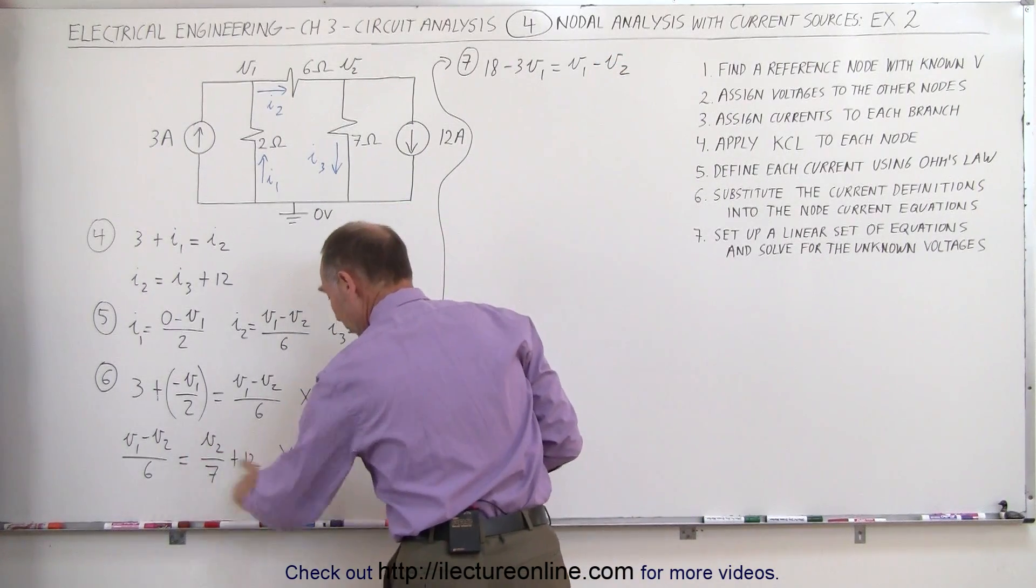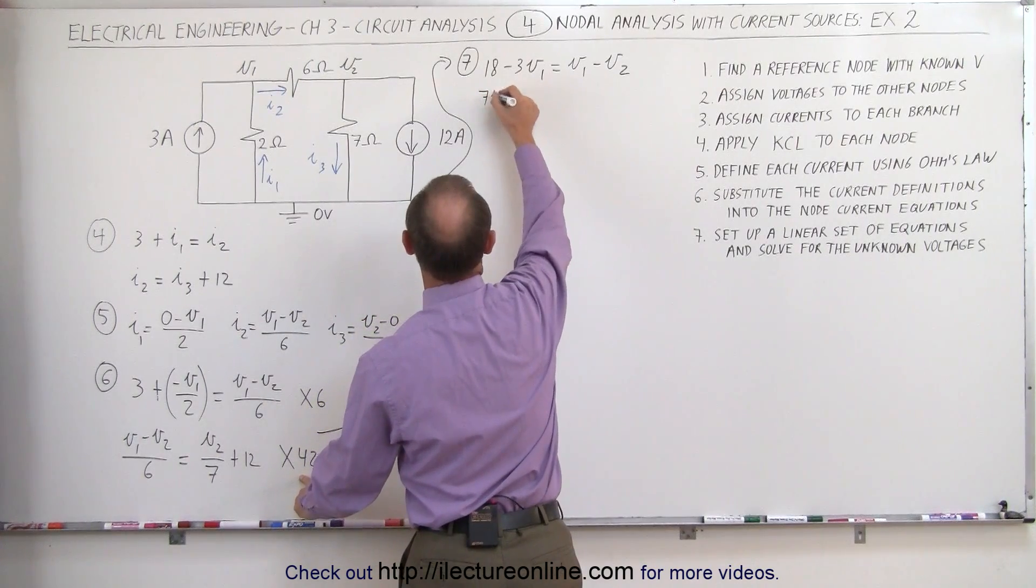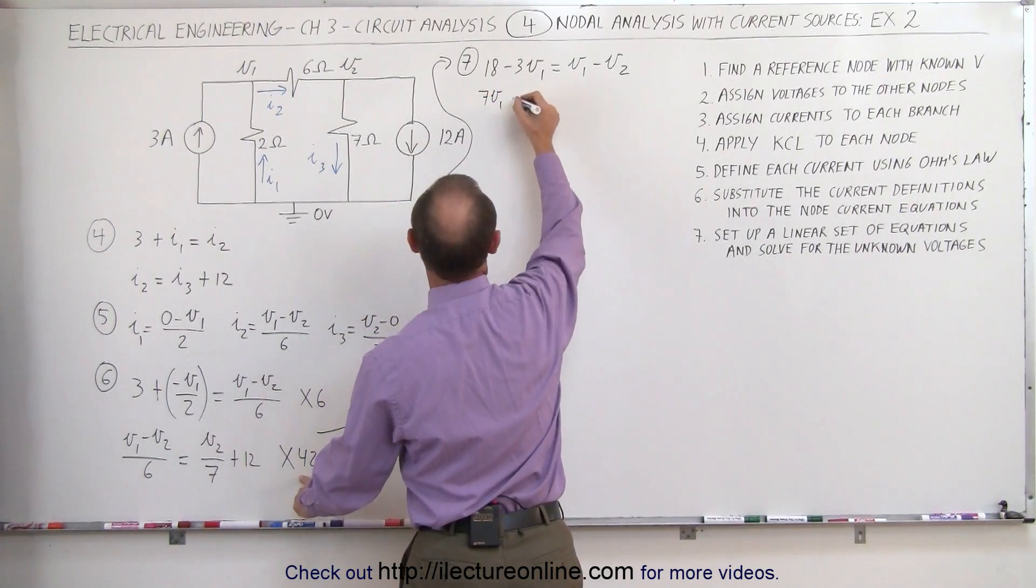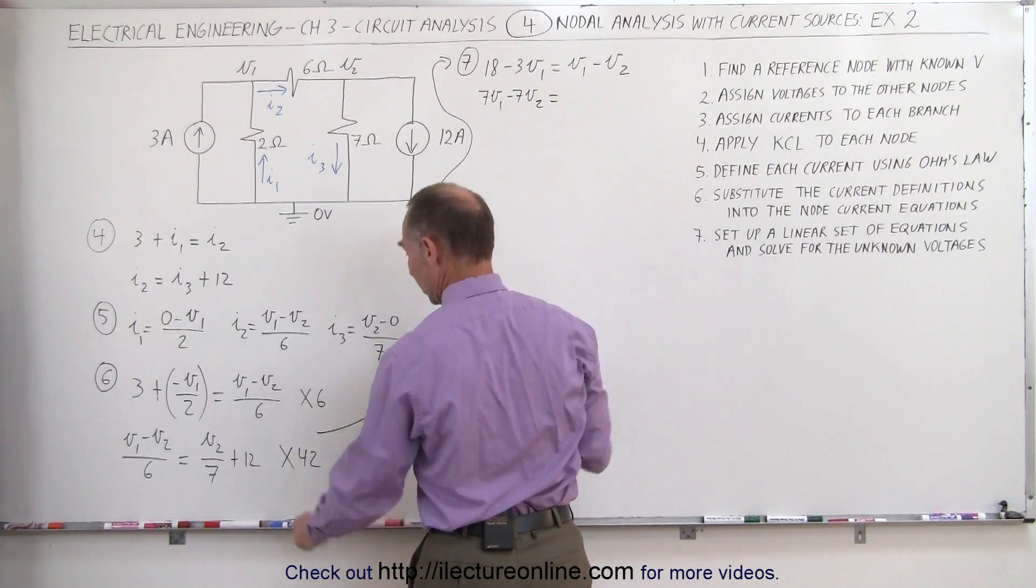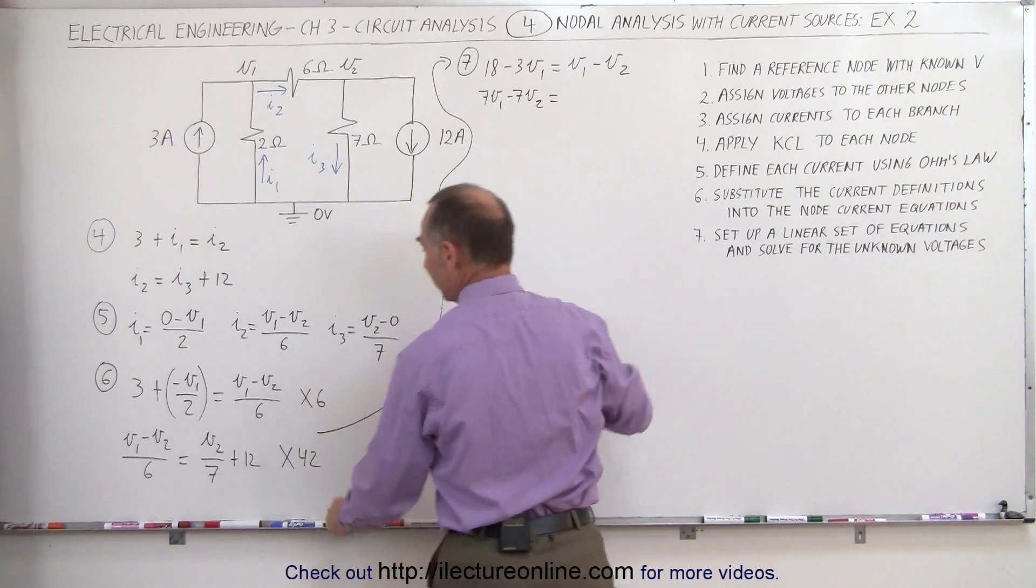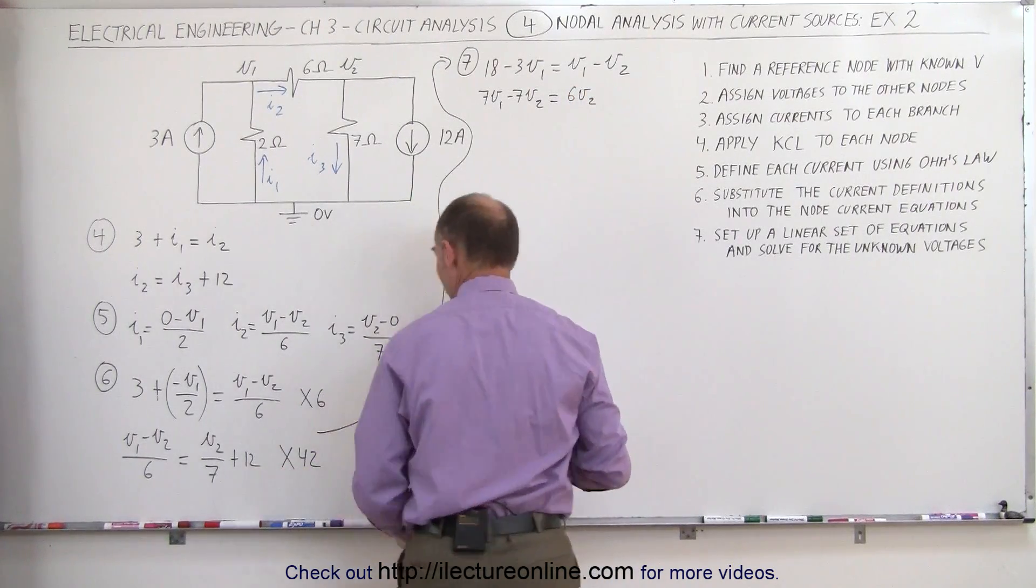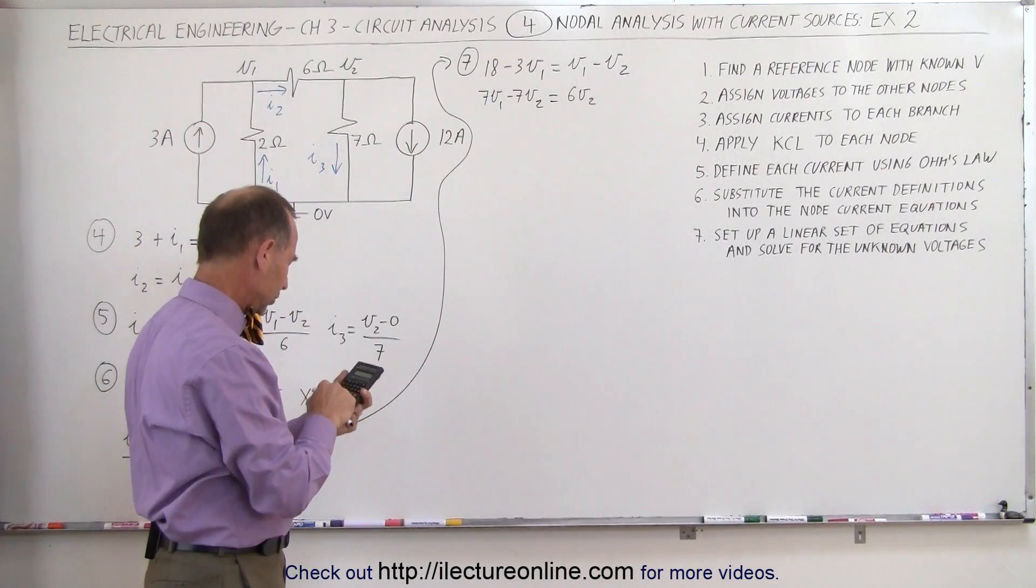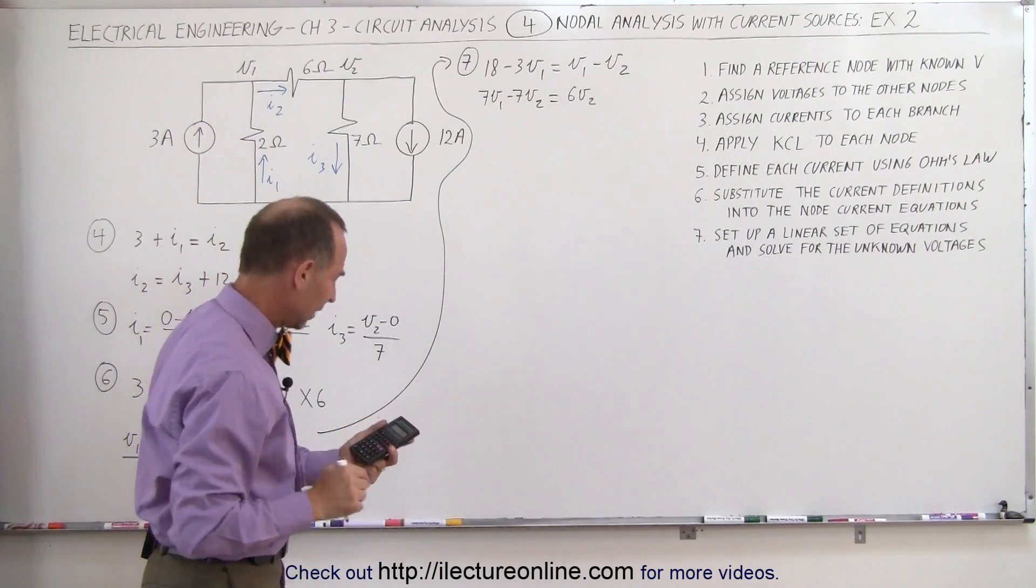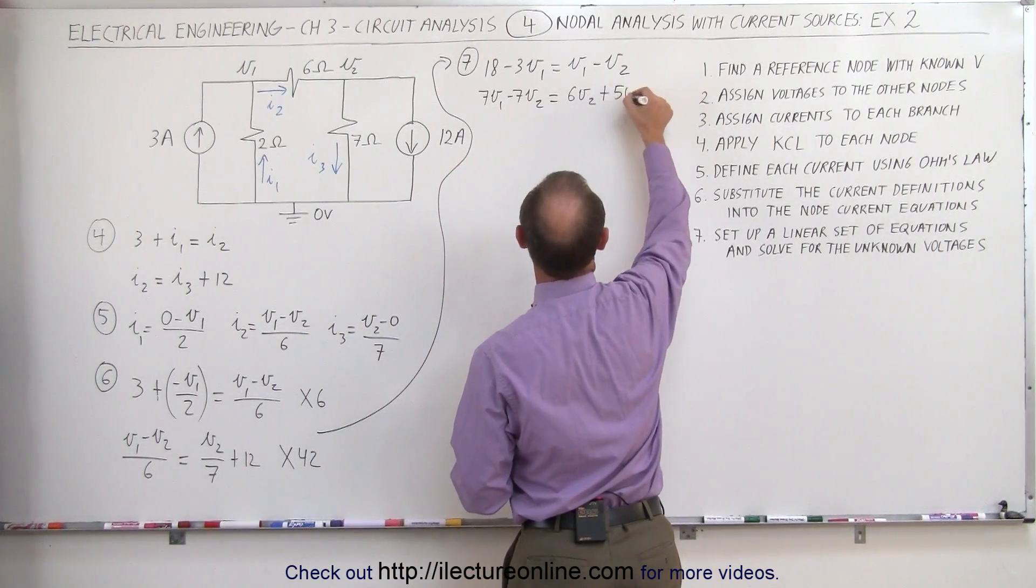The second equation, multiply times 42, 6 goes into 42 seven times, that's 7 V1 minus 7 V2 equals 7 goes into 42 six times, 6 V2 and 12 times 42. Let's just get a calculator, make sure we do that correctly. 42 times 12, we get 504 and that's a positive number, plus 504.